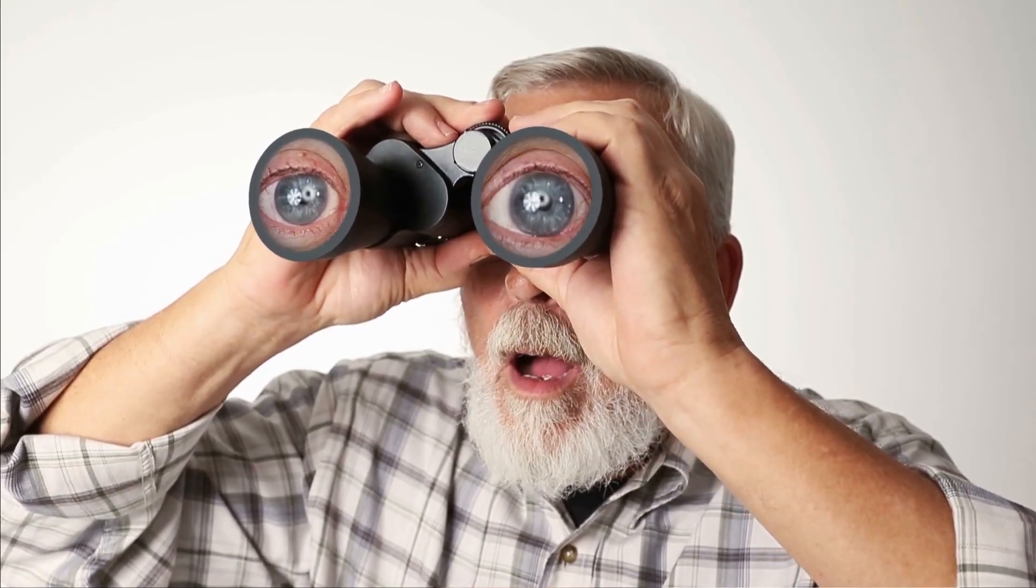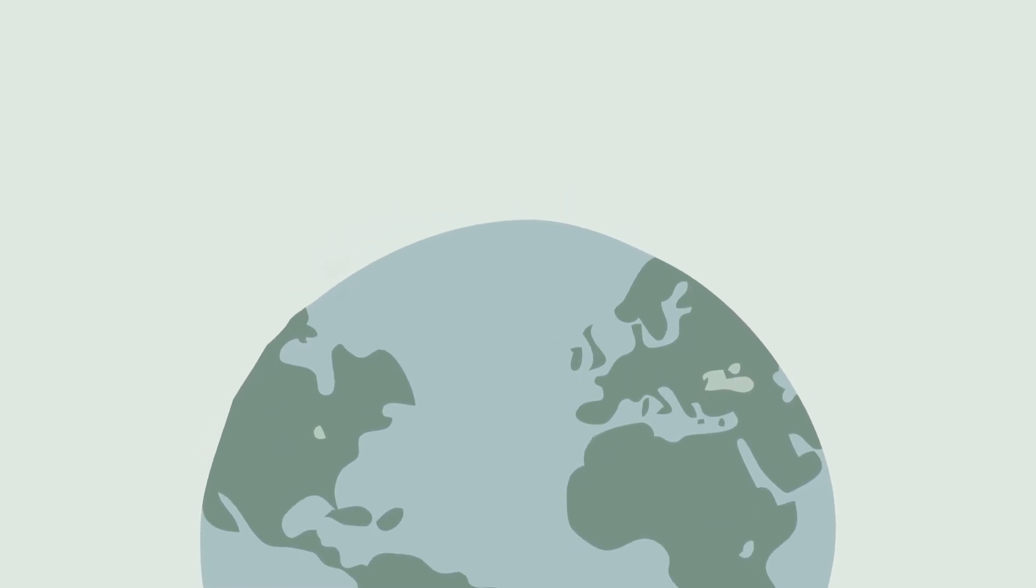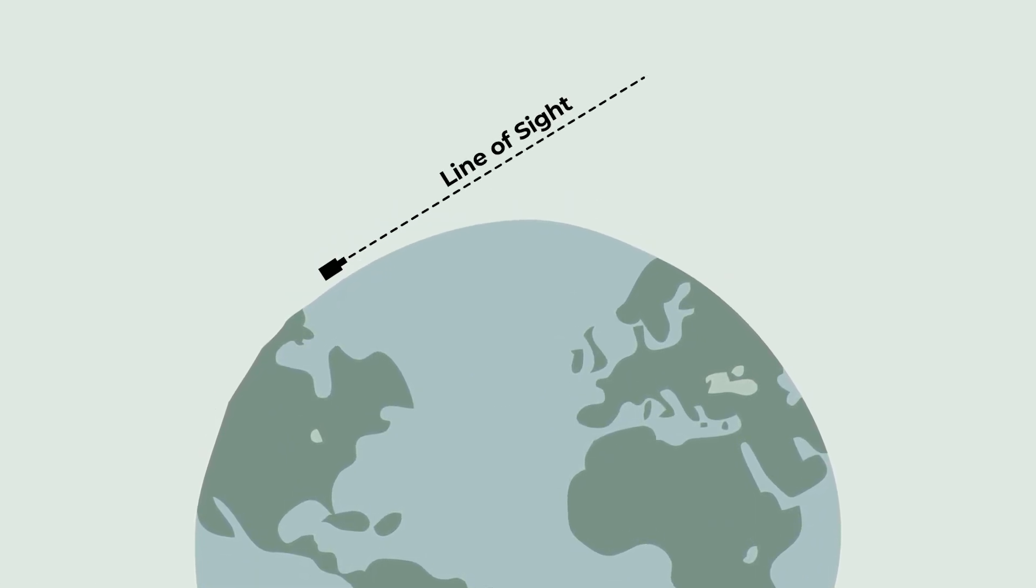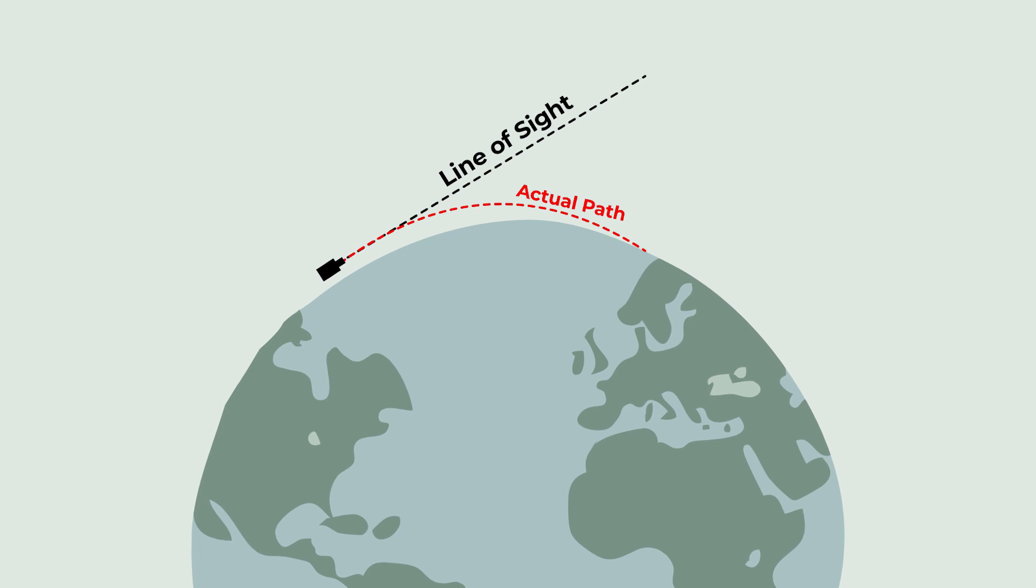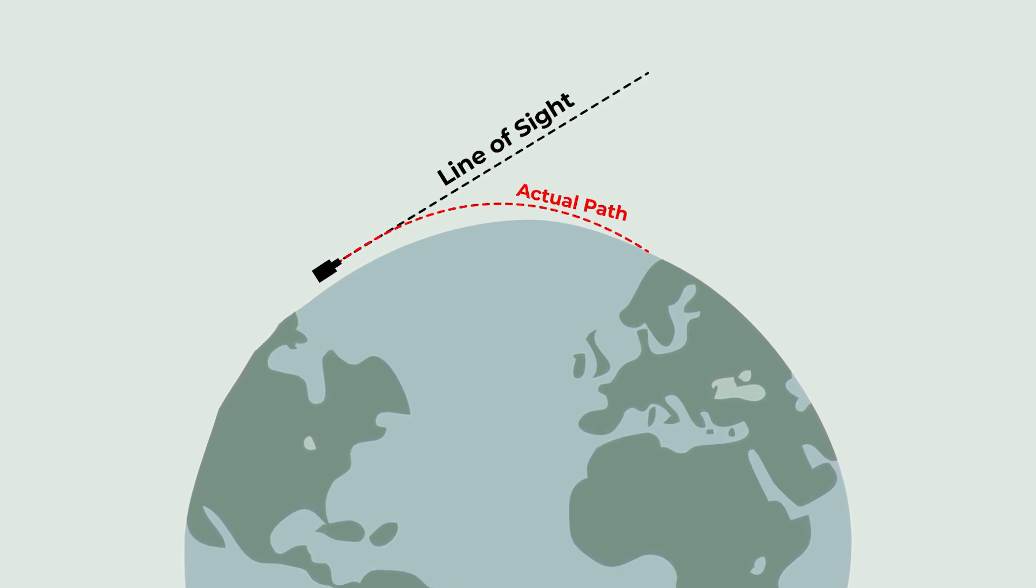Most flat Earth arguments revolve around trying to physically find the curve. Unfortunately for them, near the Earth's surface, light bends due to refraction at roughly the same degree as the Earth curves. Since the light bends around the Earth, this lets you see a little bit farther than you should be able to.